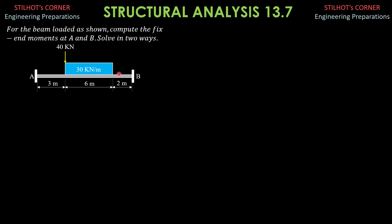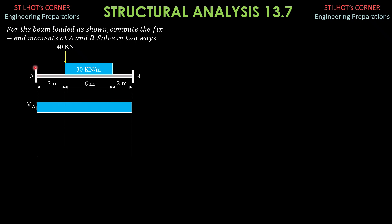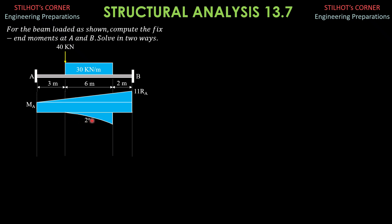First method: I'm going to draw the moment diagram by parts. I select B as the moment center. Due to the reaction at A and moment at A, I'll assume moment at A to be positive, although fixed-end moments are expected negative. So we have a rectangular diagram, and fixed-end moment MA is denoted MA. Then due to RA — RA times 11, the span is 11 — we have a triangular diagram with 11·RA on the right side. Due to the uniform load up to this end, 30 times 6 times 3, that would be 540. This is a second-degree curve, and the value is 540.